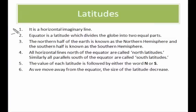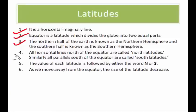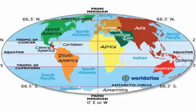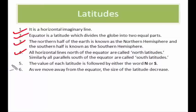Latitudes are horizontal imaginary lines — they are not vertical, they are horizontal. The equator is a latitude which divides the globe into two equal parts. It is also the longest latitude and clearly visible on any map. The equator passes through 13 countries. The northern half of the earth is known as the northern hemisphere, and the southern half is the southern hemisphere. All horizontal lines north of the equator are called north latitudes, and all lines south of the equator are called south latitudes.